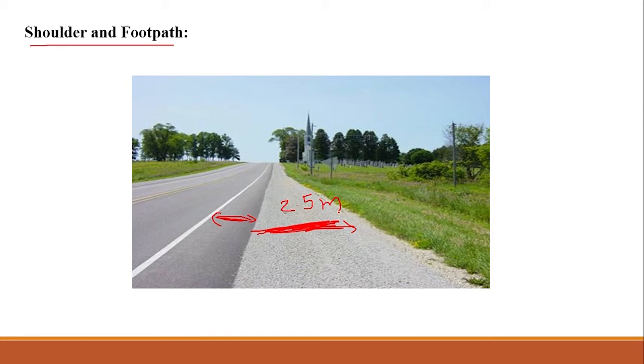Minimum width of footpath is 1.5 meters, and the desirable is 2.5 meters. Desirable means if you are comfortable you can provide 2 meters also, it will be helpful for pedestrians to walk. But you have to provide at least minimum, that is 1.5 meters.